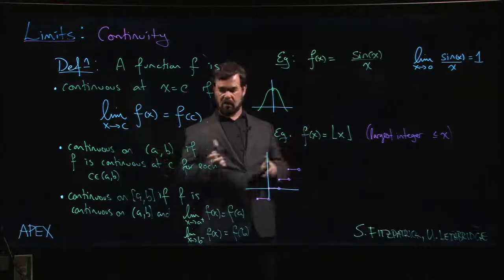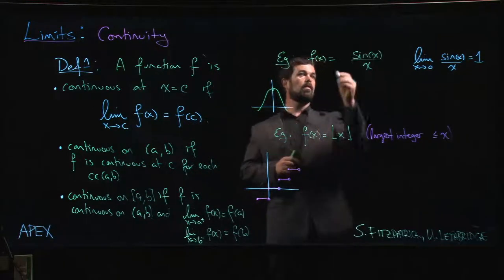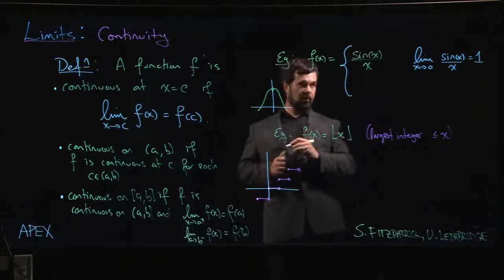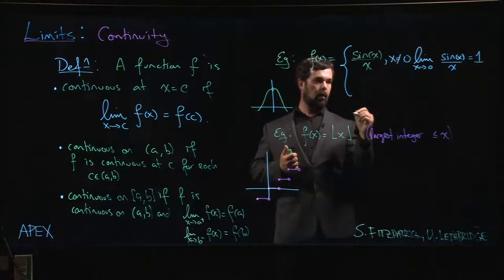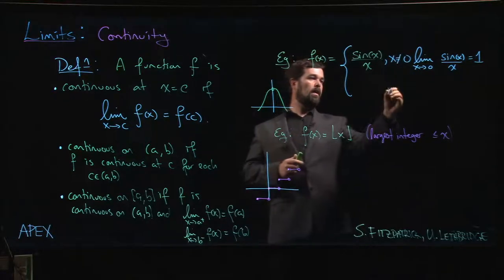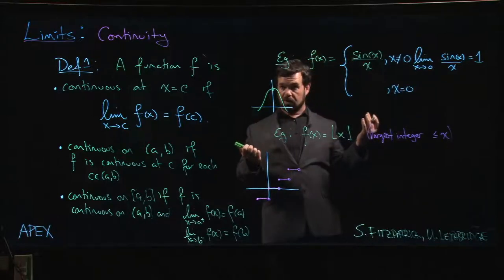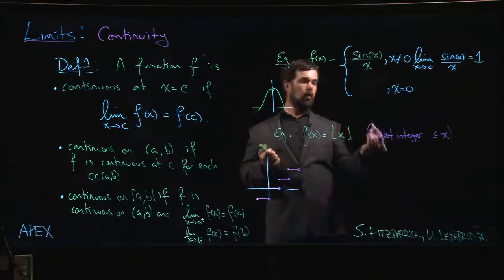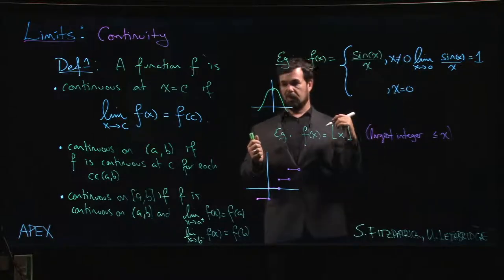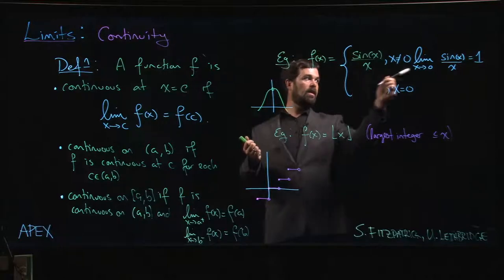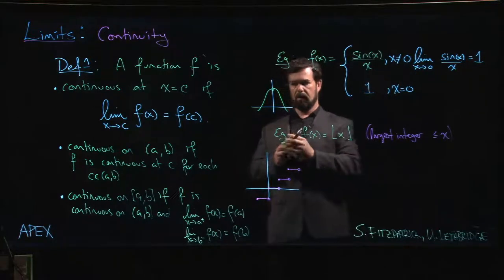If I wanted this to become a continuous function, I have to say what happens at zero, and I can't plug in just any old value. If I decided to make this zero when x equals zero, then f of zero would be defined but it wouldn't be equal to the limit. If I want f of zero to be defined, I got to make sure it's equal to the limit, so I got to give it a value of one.